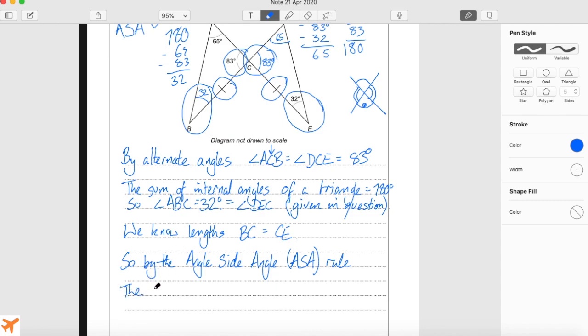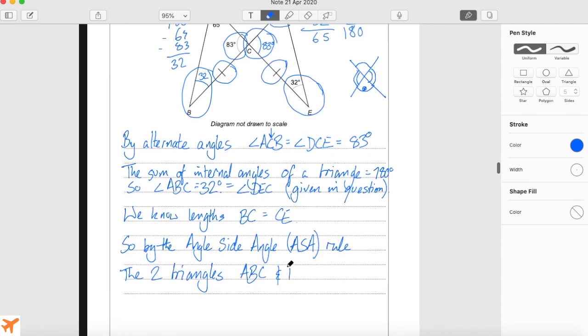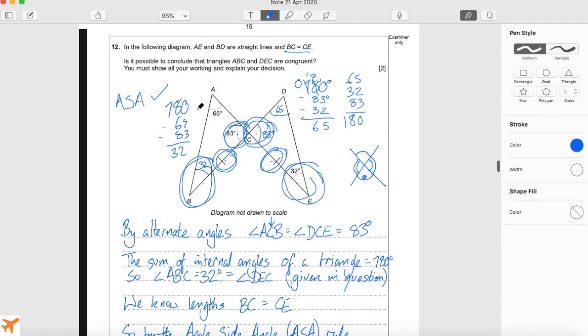The two triangles ABC and DEC are congruent because we've shown these angles are the same, this length is the same, and these angles are the same. Angle-side-angle. So that's question 12.